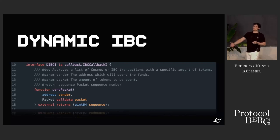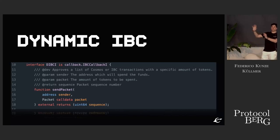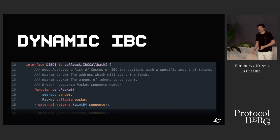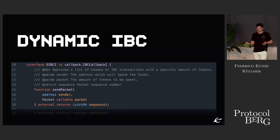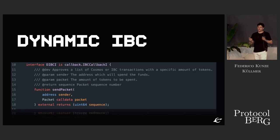Dynamic IBC is a wrapper around IBC that abstracts all this complexity from the end developer, and relies on the core technology that is well-known and very robust — the same technology the entire Cosmos ecosystem uses today. For the end developer, they only need to have the sender and the packet that defines the data. Everything else is abstracted.